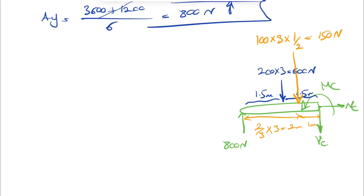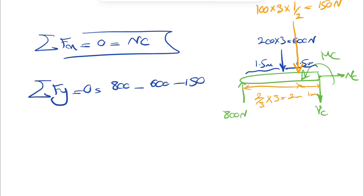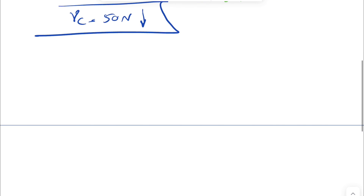Using equilibrium on the left section: sum of forces in X equals zero, so the normal force NC is zero. Sum of forces in Y equals zero: 800 minus 600 minus 150 minus VC equals zero. This gives VC equals 50 Newtons. No negative sign, so the assumed direction for the shear force is correct.